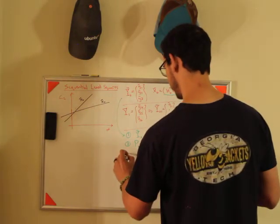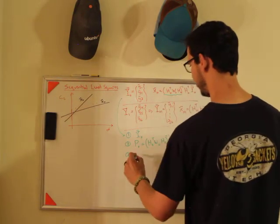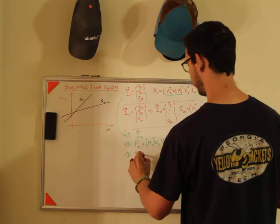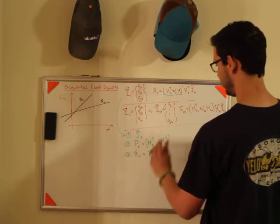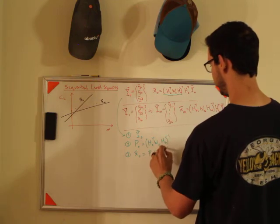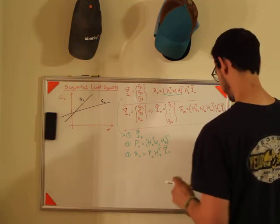and then I'm going to use Gauss's law, and I'm going to create my update, or my initial estimate, and so if you look at this equation, it's just going to be P naught, h naught transpose, y bar naught.